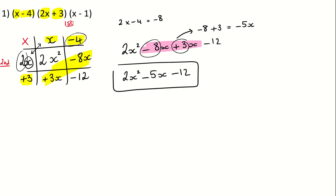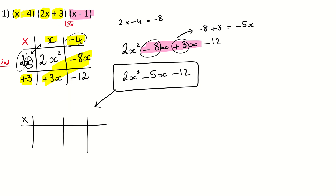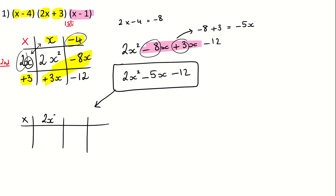This is going to be multiplied by our last bracket, and for that we need another table. One of the tables is going to have three parts to it — I always put it at the top. I'm going to put the three parts here: first part is 2x squared, next part is minus 5x — always remember the sign — and the last part is a minus 12. And then I'm going to put the third bracket there: x to start with, and minus 1.